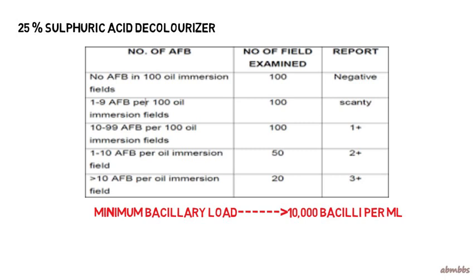If no bacilli are seen in 100 oil immersion fields, the result is considered negative. If 1 to 9 bacilli are seen in 100 oil immersion fields, the result is considered scanty. If 10 to 99 bacilli are seen in 100 oil immersion fields, the result is plus 1. If 1 to 10 bacilli are seen per oil immersion field, it is plus 2. If greater than 10 bacilli are seen per oil immersion field, it is plus 3.